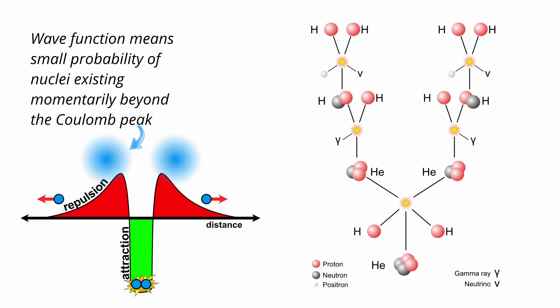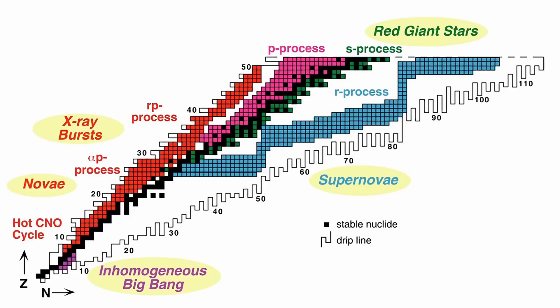Quantum tunneling plays a critical role, allowing nuclei to fuse even when their kinetic energy is insufficient to overcome the repulsive forces. This delicate balance of forces enables stars to create elements, beginning with hydrogen burning to helium and progressing to heavier elements in advanced stages of stellar evolution.